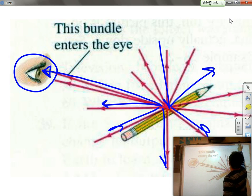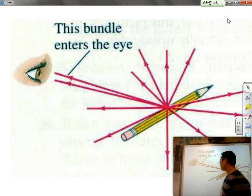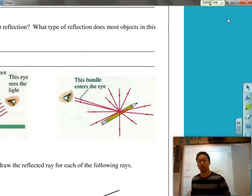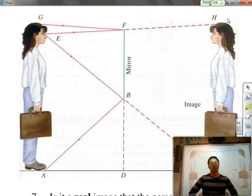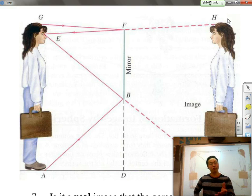But what does this have to do with optics and mirrors? Well, if you turn to the next page in the packet, you'll see a diagram of a woman who is looking at herself in the mirror. And the question is, why is the woman able to see herself in the mirror?